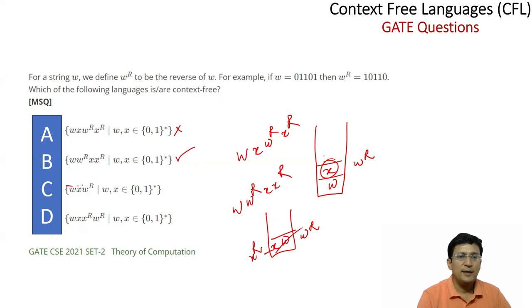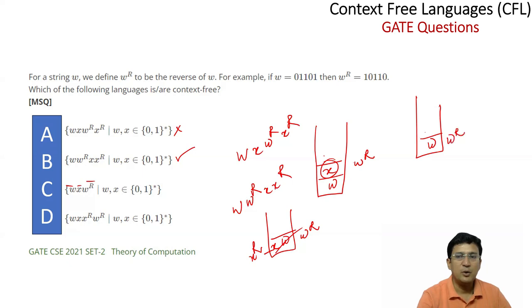For X and its reverse: X is pushed. Since X is on the separator, then for X reversed, X is popped. This operation is possible using the PDA stack.